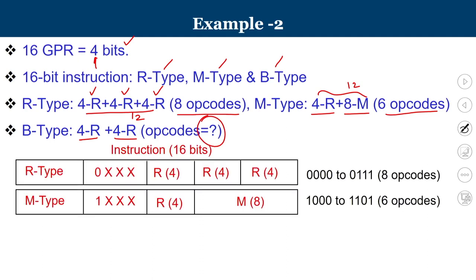For R-type: 3 register operands × 4 bits = 12 bits, leaving 4 bits for the opcode field. Since there are 8 opcodes, only 3 bits are needed. We assign MSB = 0 to indicate R-type, and the remaining 3 bits (000 to 111) represent the 8 unique opcodes. So if MSB is 0, it is R-type, and the next 3 bits specify which of the 8 opcodes it is.